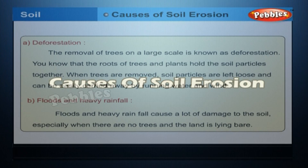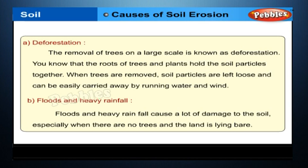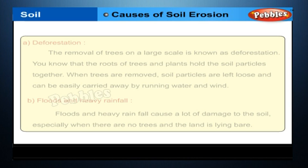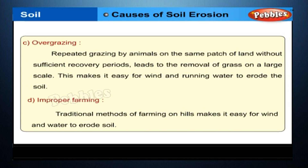Causes of soil erosion: Deforestation — the removal of trees on a large scale — is a major cause. The roots of trees and plants hold soil particles together; when trees are removed, soil particles are left loose and can be easily carried away by running water and wind. Floods and heavy rainfall cause a lot of damage to the soil, especially when there are no trees and the land is bare. Overgrazing — repeated grazing by animals on the same patch of land without sufficient recovery periods — leads to removal of grass on a large scale, making it easy for wind and water to erode the soil. Improper farming on hills also makes it easy for wind and water to erode soil.